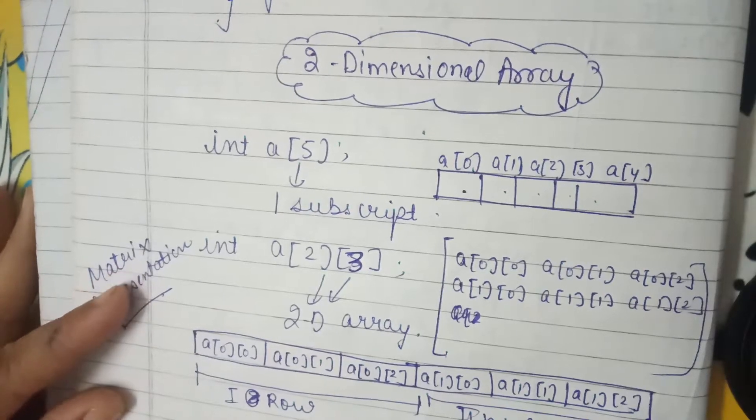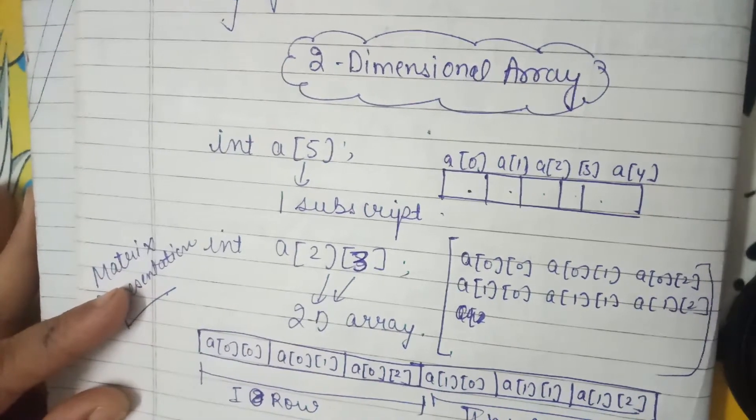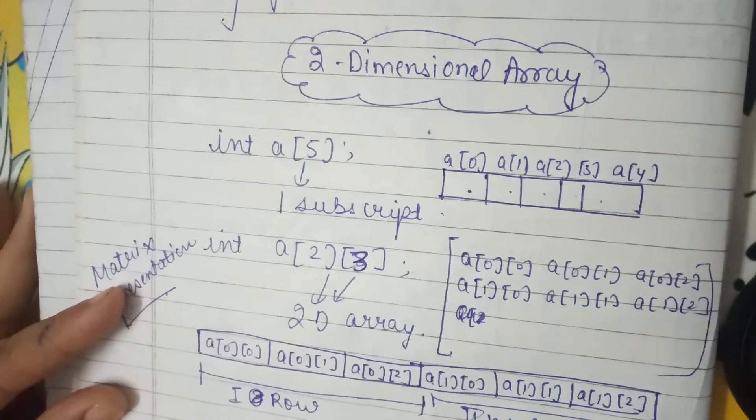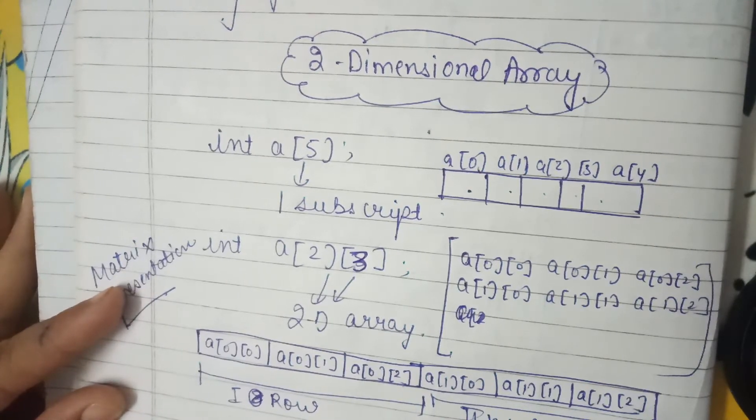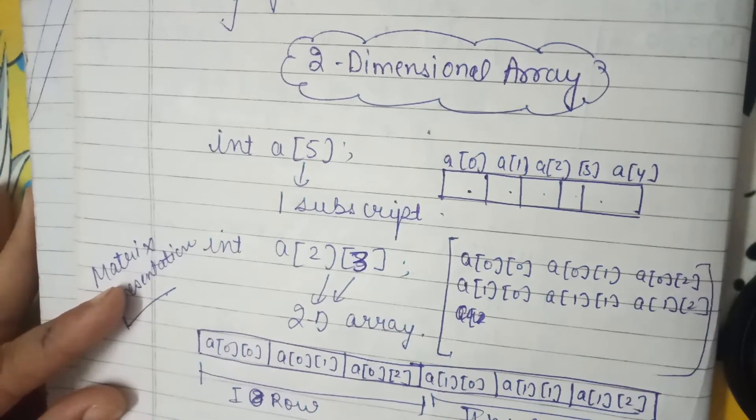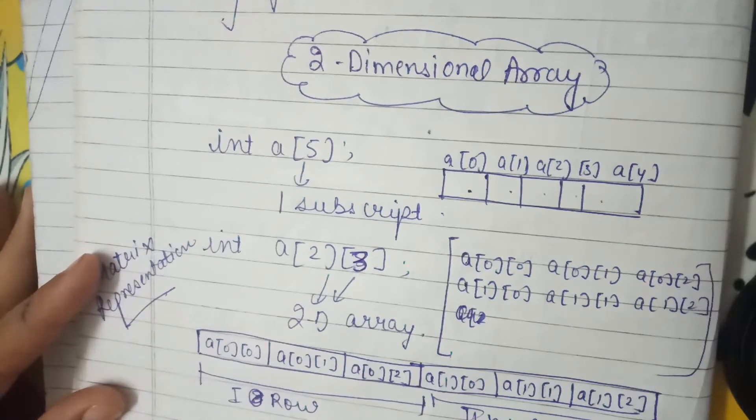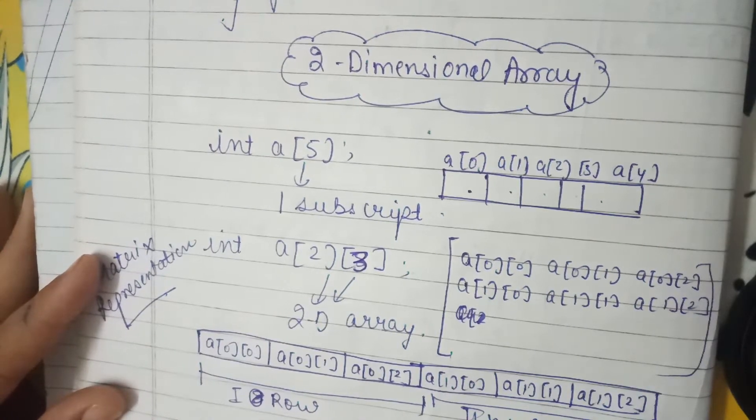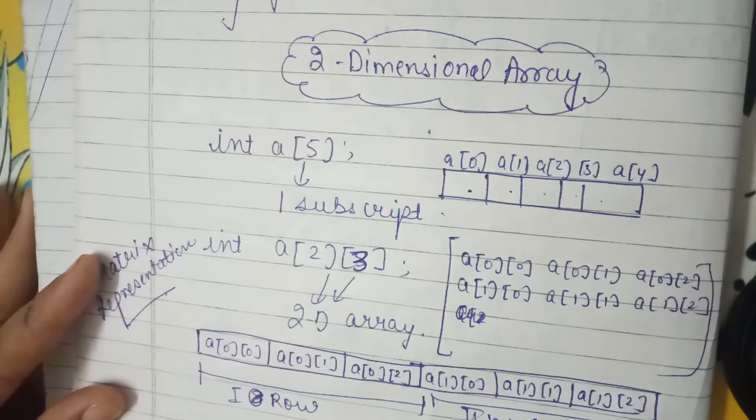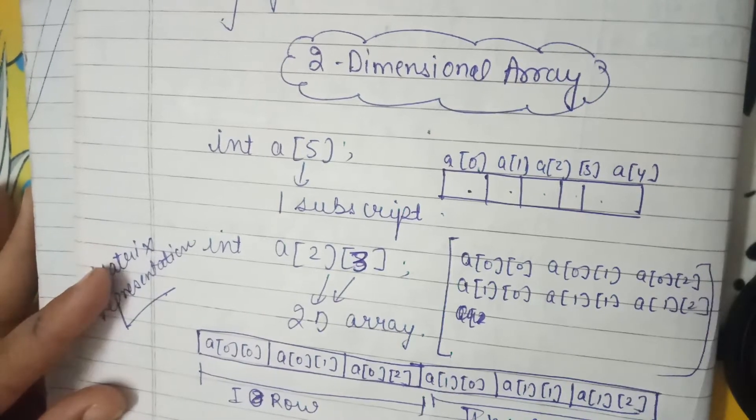So next topic is two-dimensional array. Previous video we understood one-dimensional array. Now two-dimensional array means we have two dimensions mentioned in array - one dimension is row and second dimension is column.